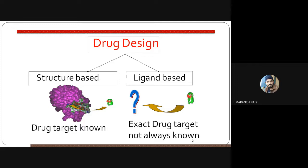Drug designing is of two types: structure-based drug designing and ligand-based drug designing. In structure-based designing, when we have a receptor and the drug target is known, we can design a drug very easily. When we don't exactly know the drug target, we go for ligand-based design. In ligand-based drug discovery, we use a pharmacophore approach and examine interactions and comparisons between different types of ligands.